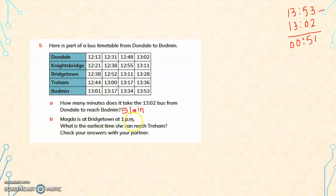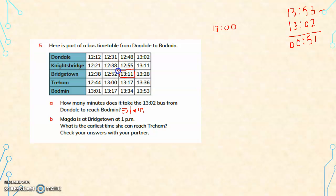Magda is at Bridgetown at 1 p.m. She can take a train only after she has reached the station. 1 p.m. is 13 hours. The first bus after 13 hours at Bridgetown is 13:11. So the earliest bus that she can take is at 13:11.